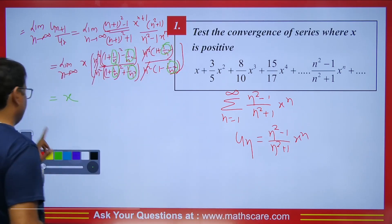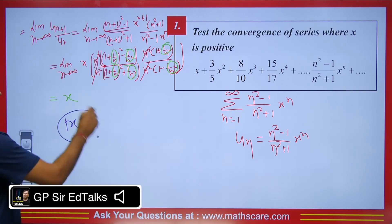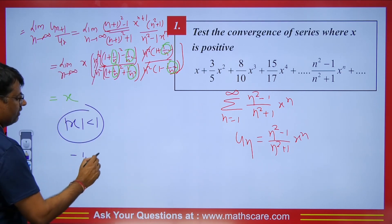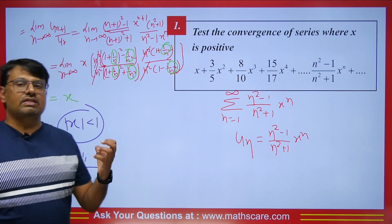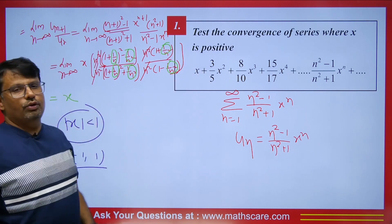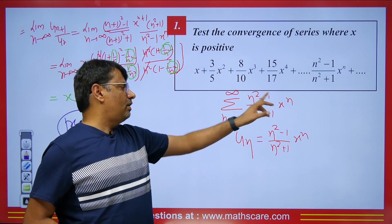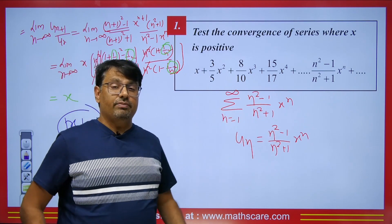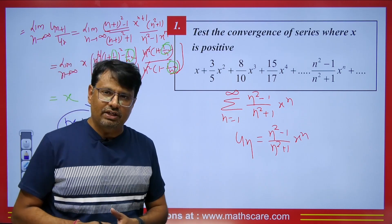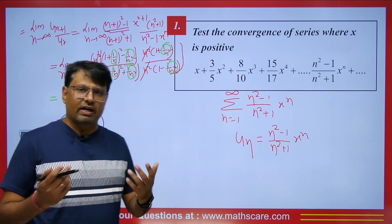If |x| < 1 the series is convergent; the interval is (-1, 1). At x = 1, the term (n²-1)/(n²+1) does not approach 0, so the necessary condition for convergence fails. At x = -1 it also fails the Leibniz test. So the series does not converge at x = 1 or x = -1.